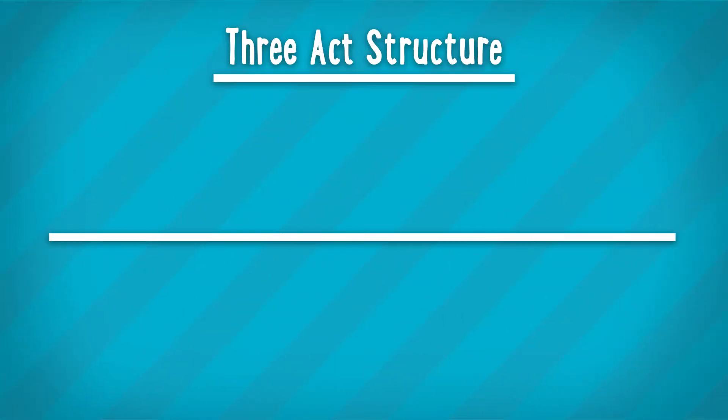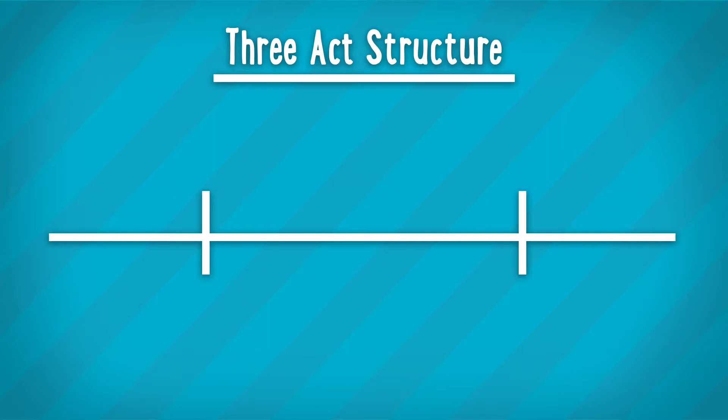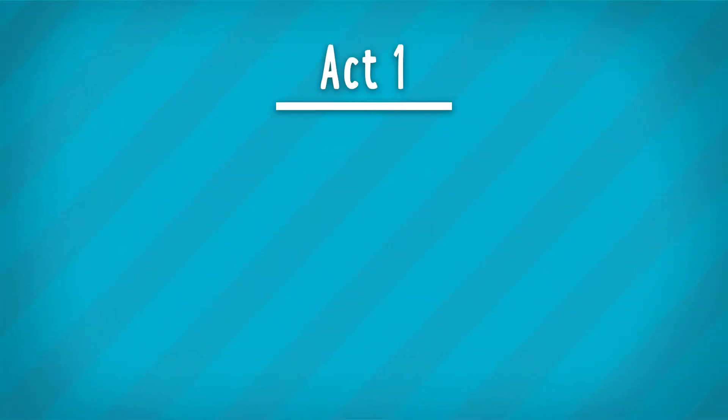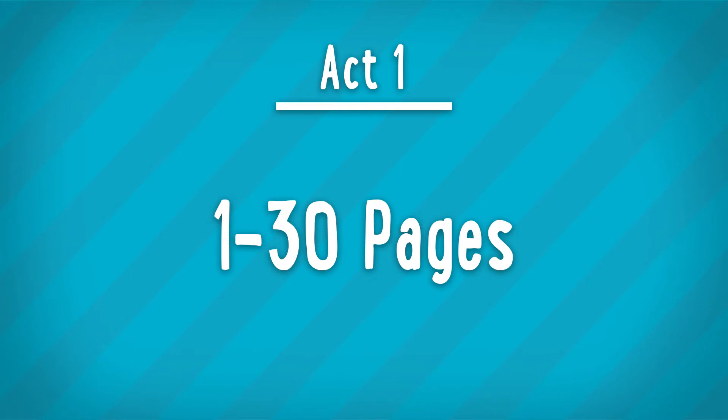The three-act structure is probably so popular because every story has a beginning, middle, and end. By breaking it up this way, the three-act structure creates logical breaking points by dividing your story into Act 1, Act 2, and Act 3. So let's start with Act 1. Act 1 is where you'll want to introduce your main character, also known as the protagonist. You'll also want to define what their normal world and daily life look like, as well as set up any important elements that might come into play later on. It's also where that all-important inciting incident will fall.